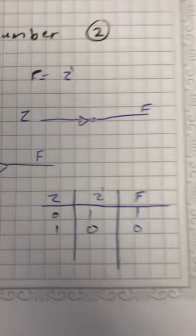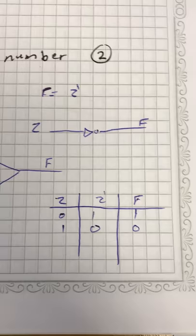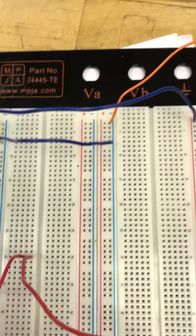The second part of the equation: F equals Z prime. This system is now complete, and this is the truth table for it. Now I have to test it.